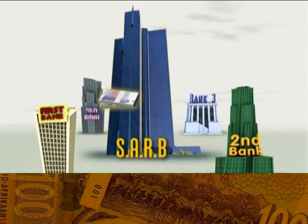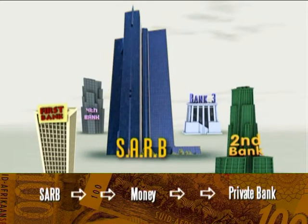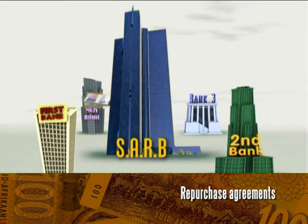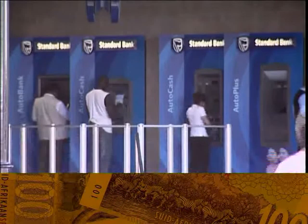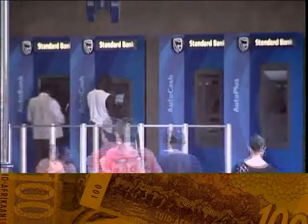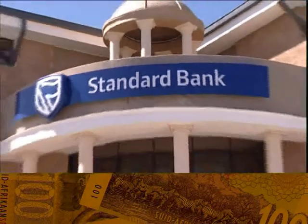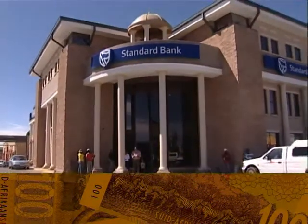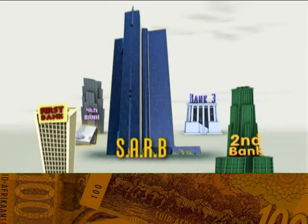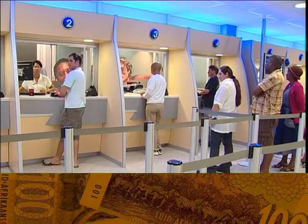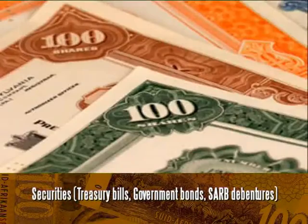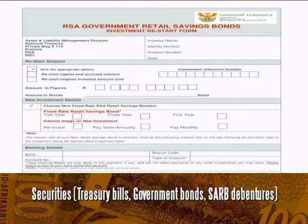When private banks need to borrow money to finance their shortfalls or deficits, they do it by borrowing from the central bank. This is done through repurchase agreements between the South African Reserve Bank and the private bank in question. Imagine that an unusually high number of withdrawals overnight have left First Bank with a temporary liquidity problem — the bank needs 300 million rands in cash quickly to meet any more withdrawals. Private banks keep something called securities, financial assets like treasury bills,